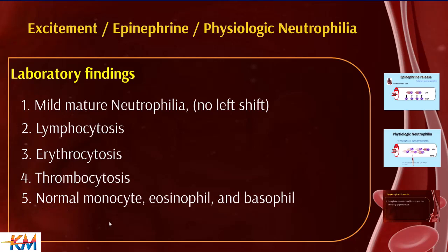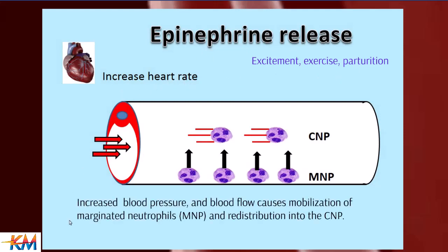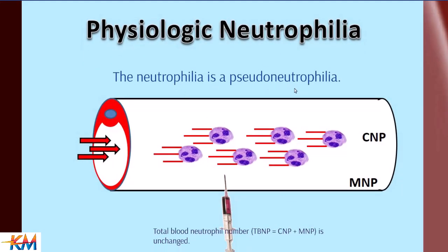Physiologic neutrophilia is a transient condition, occurring for only 20 to 30 minutes, after which cell counts return to normal. Causes include excitement, exercise, and parturition. The mechanism involves epinephrine release, which increases heart rate, blood pressure, and blood flow, causing mobilization of marginated neutrophils that become redistributed into the central neutrophilic pool. Therefore, physiologic neutrophilia is called pseudo-neutrophilia.